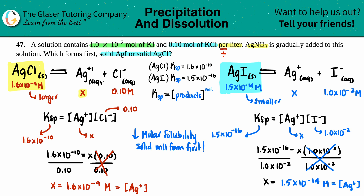Negative 14 is lower than negative 9 on a number line, so the lower molar solubility compound precipitates first. That is AGI — AgI will form first. And that is your answer.